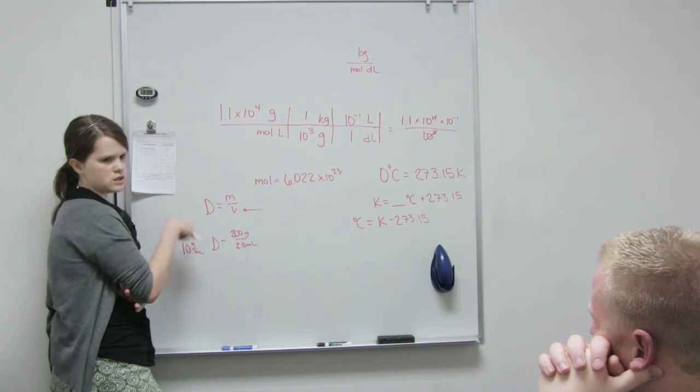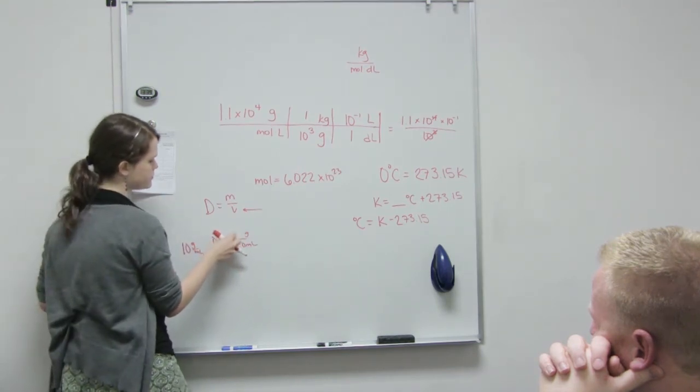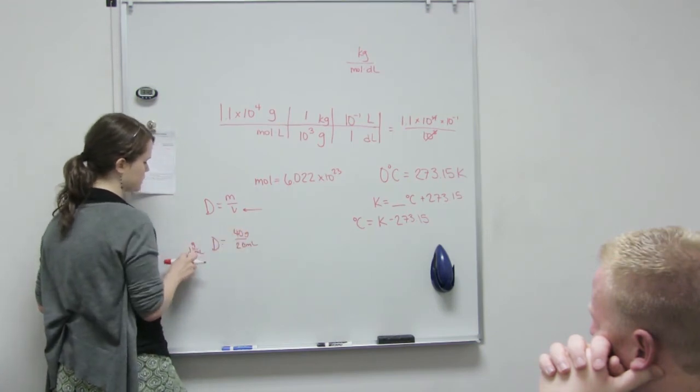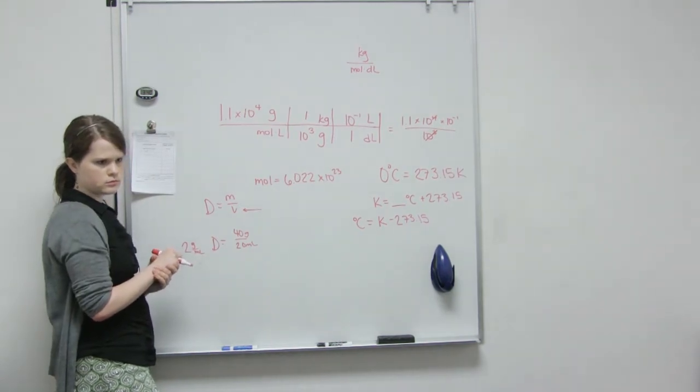So as the mass goes up, density goes up. But how about if this one was small? Well, then this one gets small as well.